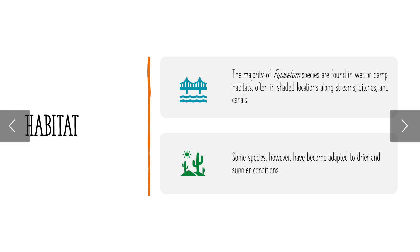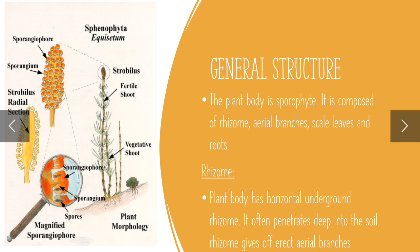Habitat: the majority of Equisetum species are found in wet or damp places, in moist and shady areas. Some species have the ability to grow in dry conditions. The plant body is composed of rhizome, aerial branches, scale leaves, and roots.